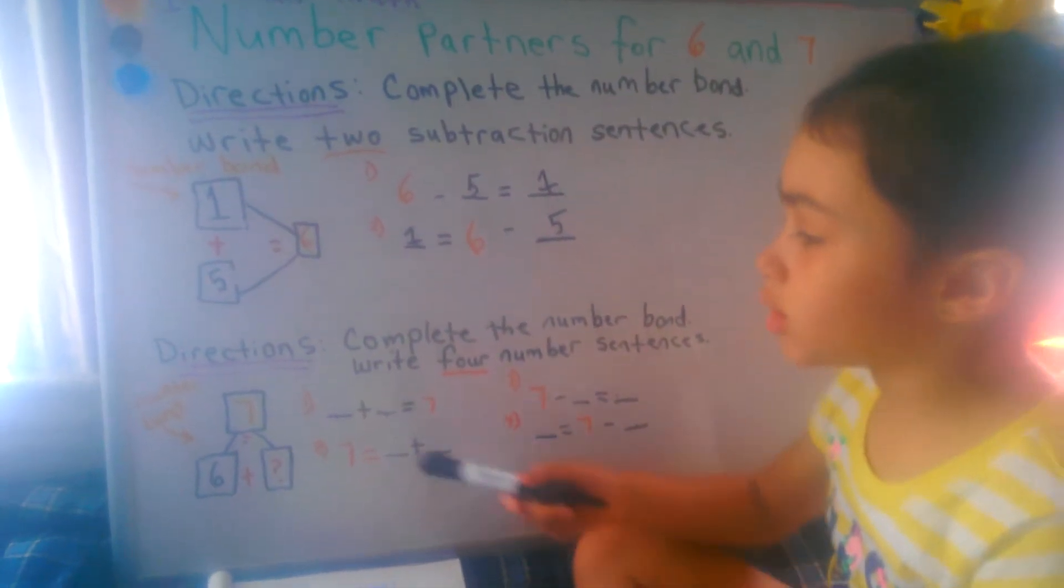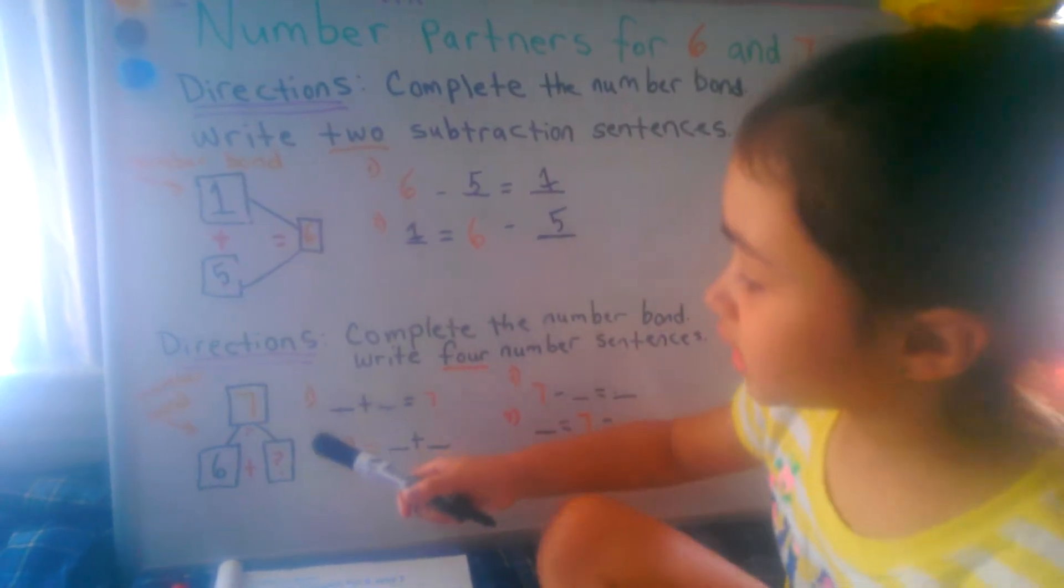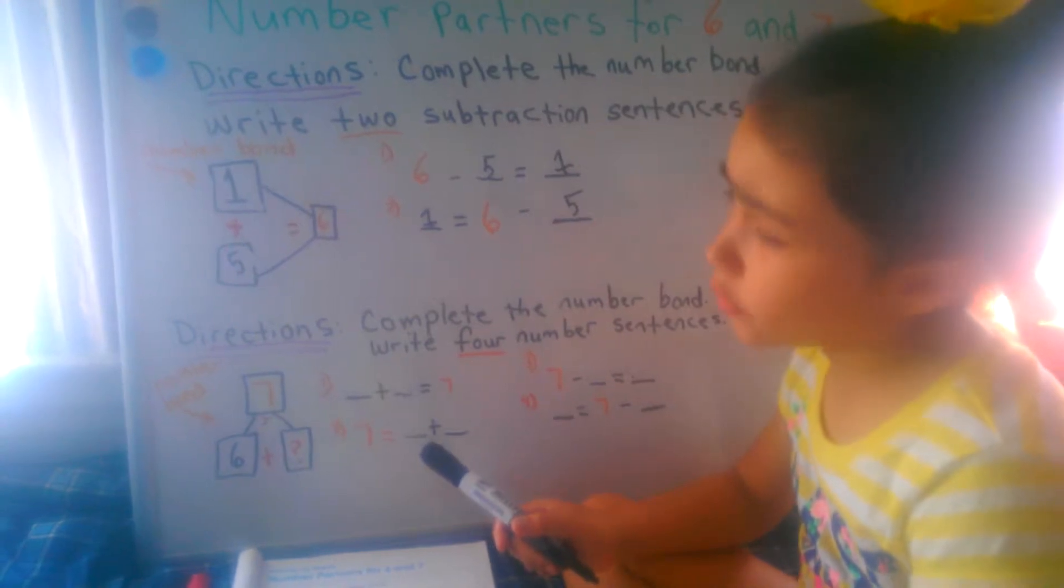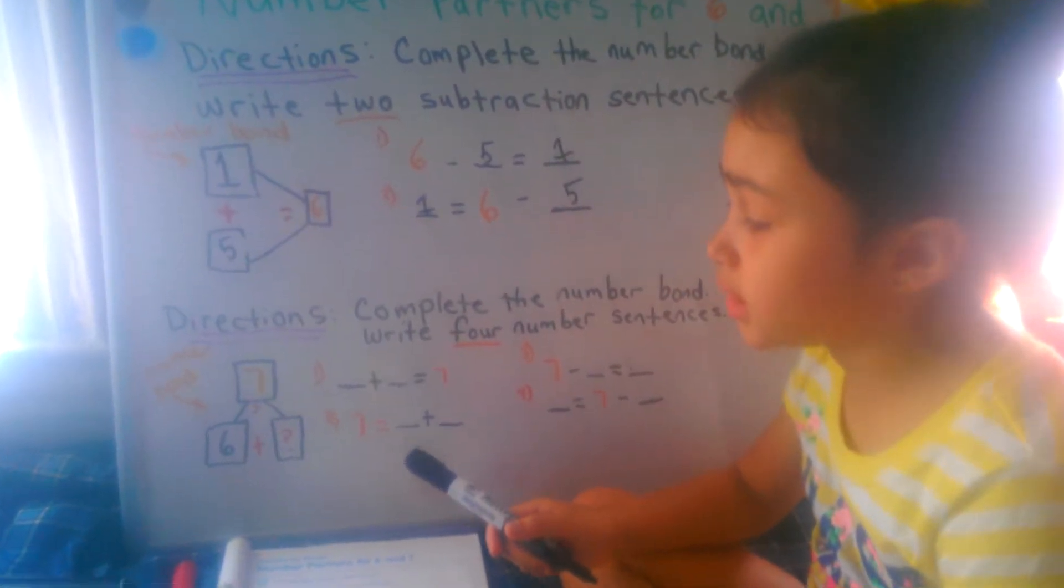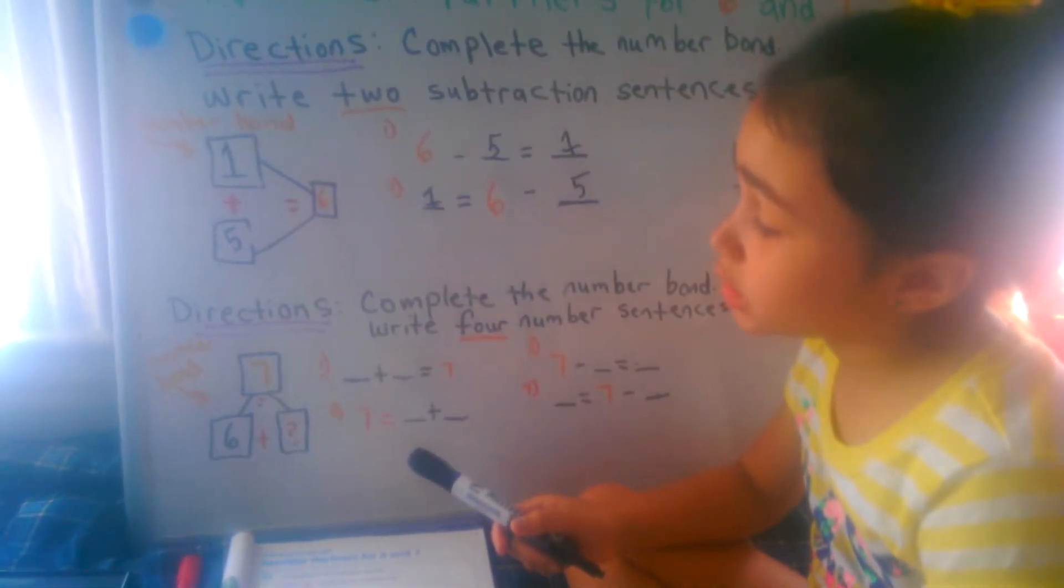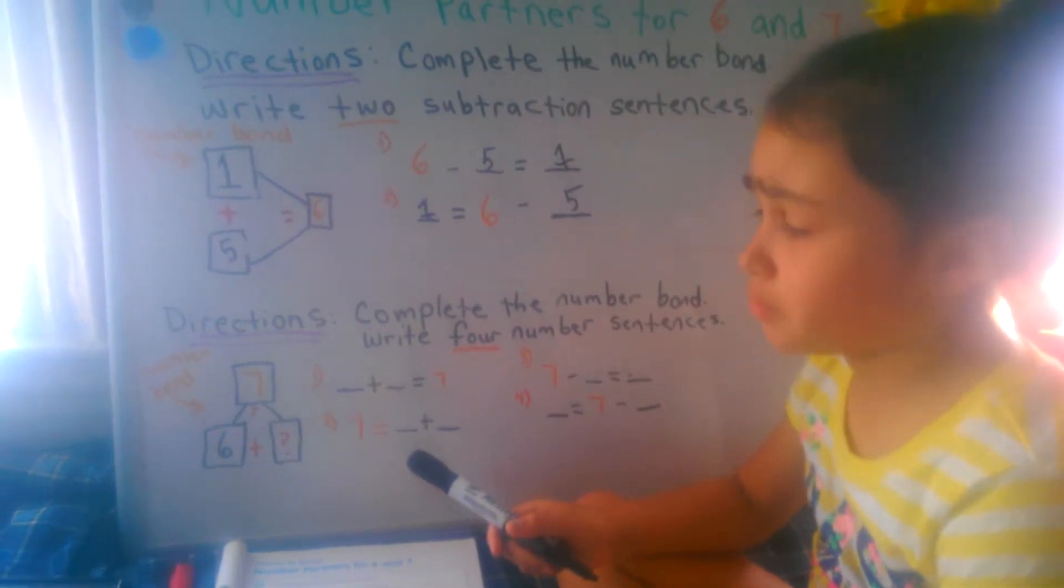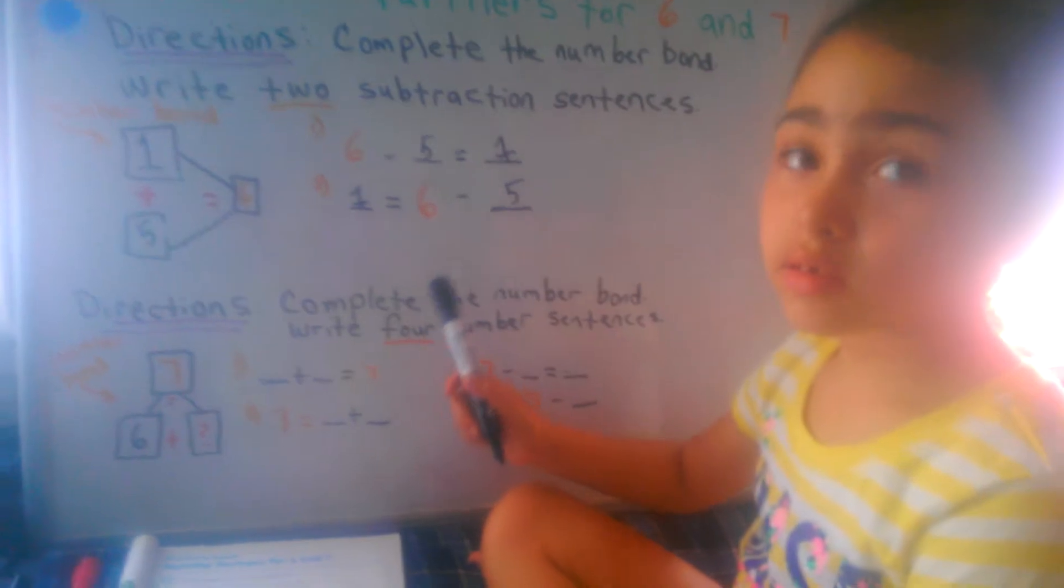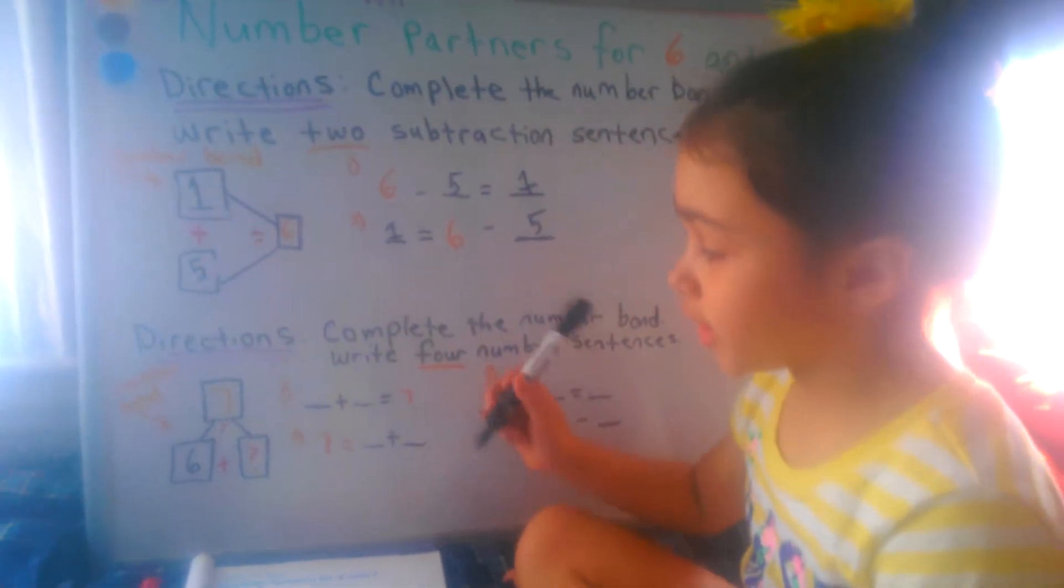Then we come to the number bond. Seven. Six plus what equals seven? Then we come over here. Wait, no. Write the answer.